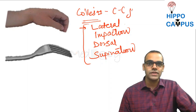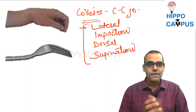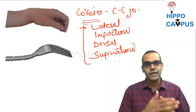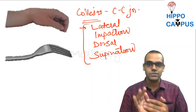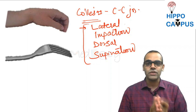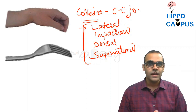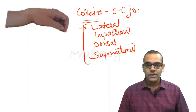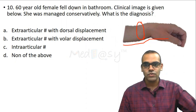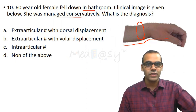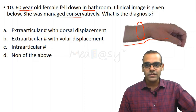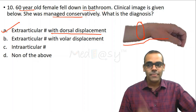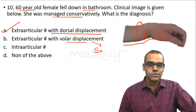The dinner fork deformity is seen in Colles' fracture — an extra-articular fracture with dorsal displacement. The mnemonic for Colles' displacement is LIDS: Lateral shift and lateral displacement, Impaction, Dorsal tilt and displacement, and Supination. Colles' fracture is at the cortico-cancellous junction of the distal radius and usually occurs when the patient falls on an outstretched hand. Treatment is closed reduction and Colles' cast.